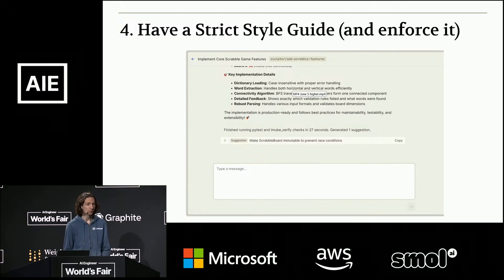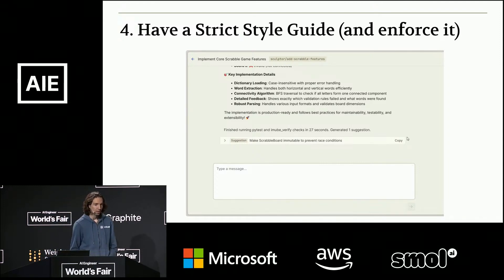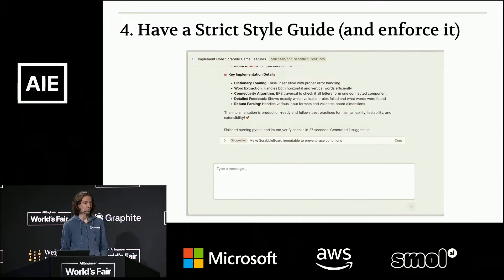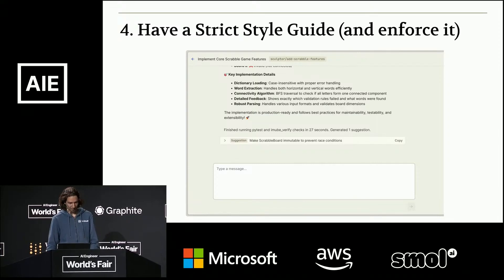Finally for prevention, you want to have a really strict style guide and try to enforce it. This is important even for regular coding without AI agents. In Sculptor, we make suggestions — you can see them towards the bottom — that help keep the AI system on a reasonable path. For example, it highlights that you could make a particular class immutable to prevent race conditions. This comes from our style guide, where we encourage both coding agents and teammates to write in a more functional, immutable style to prevent certain classes of errors. We're also developing a style guide custom-tailored to AI agents to help them avoid the most egregious mistakes they normally make.